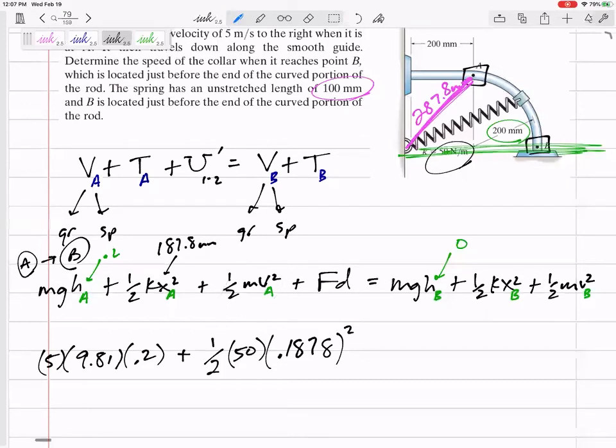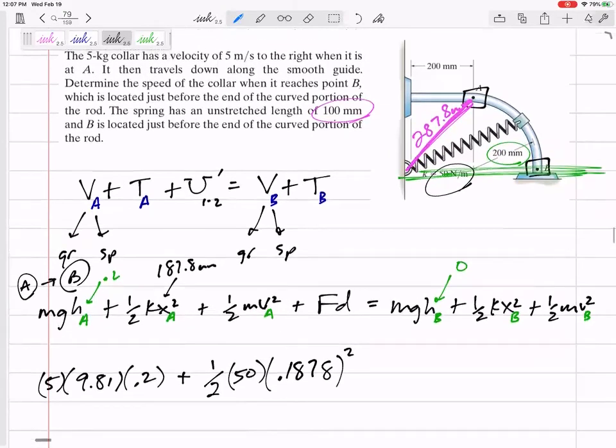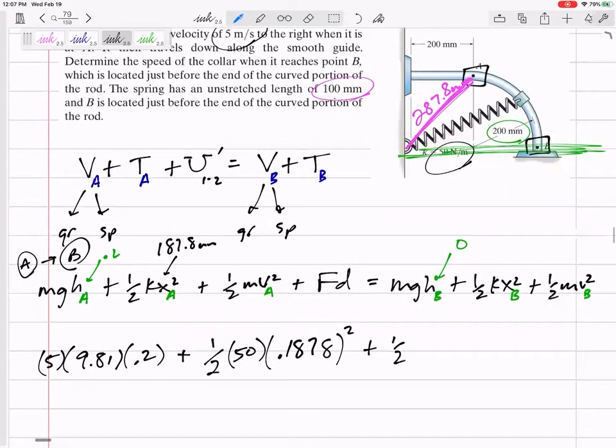Now the 1⁄2 MV squared initial. Did it say it started from rest? Some of these say it starts from rest, so you don't have to worry about that. But this one, it did not say started from rest. It has a velocity of 5. 1⁄2 MV squared right there.